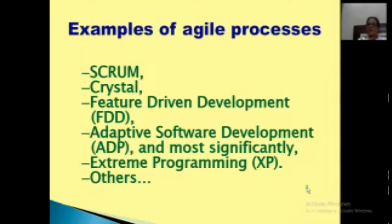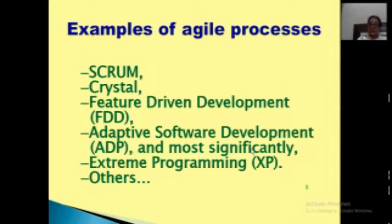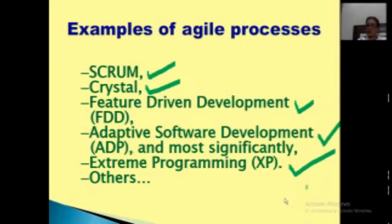Various examples of Agile processes can be seen today, like Scrum, Crystal, Feature-Driven Development, Adaptive Software Development, and Extreme Programming. These can become subtopics of study within Agile development. But in MIS, you need to study this much only: what is Agile development, what are its important principles, four values, and advantages.